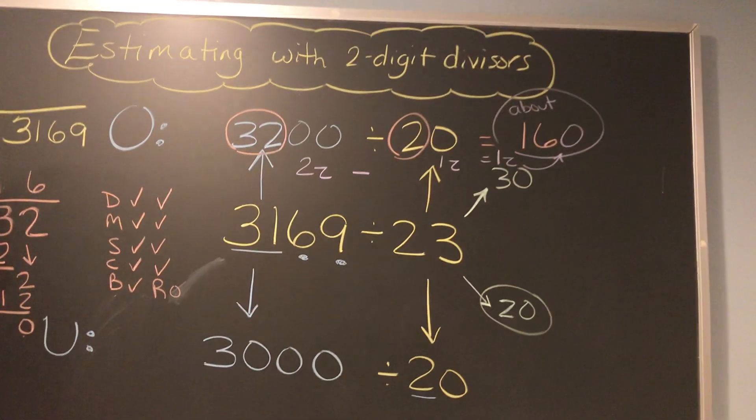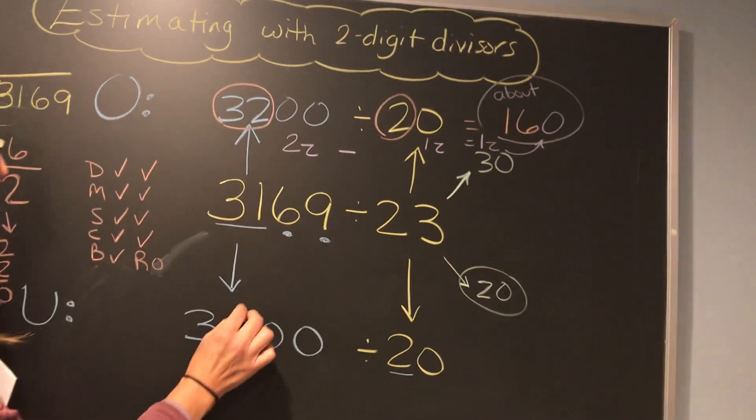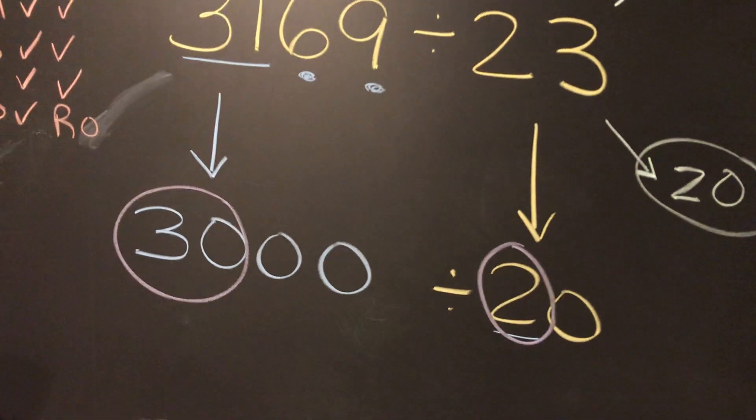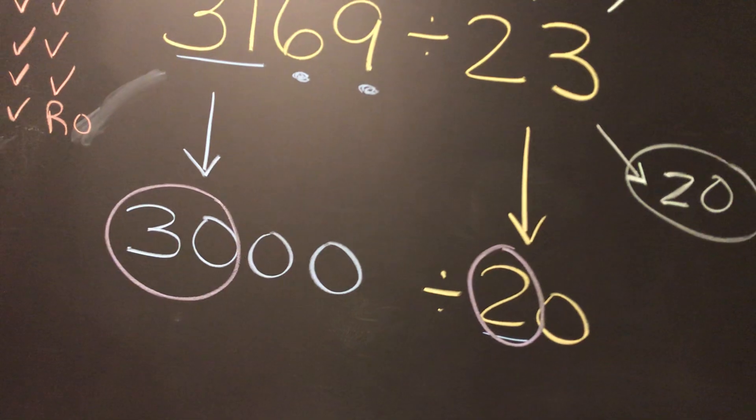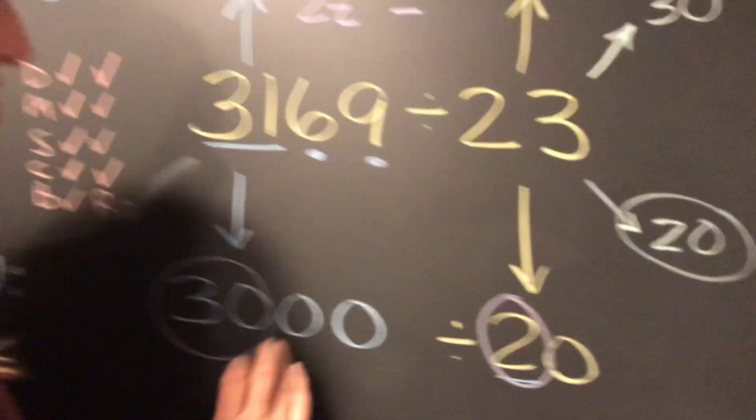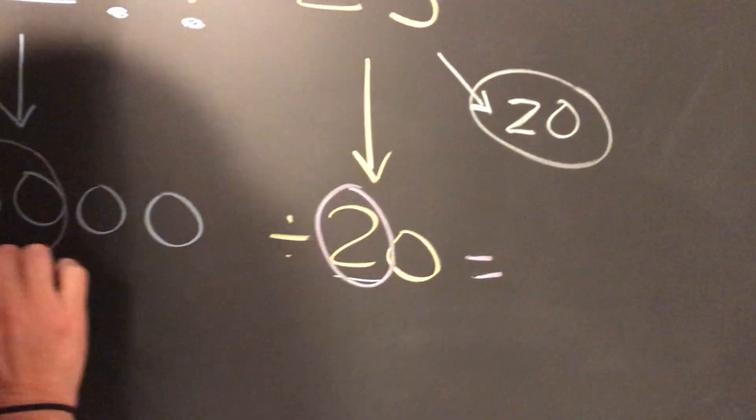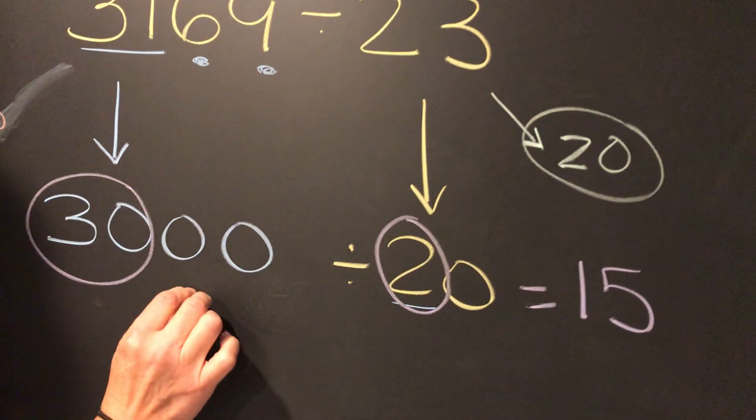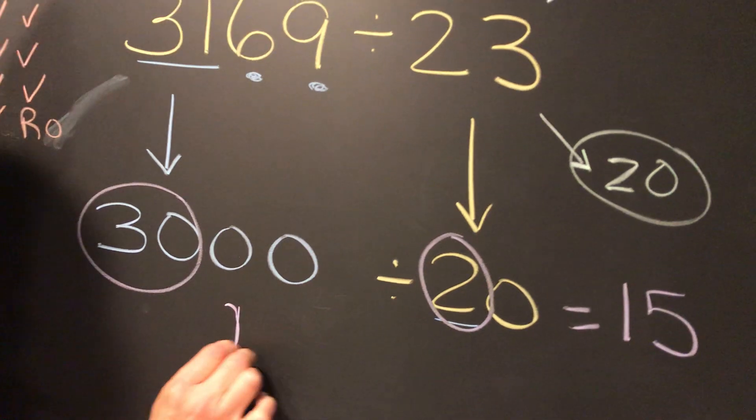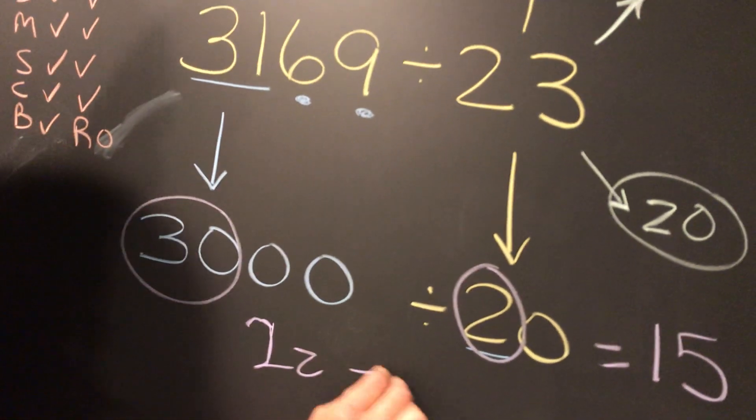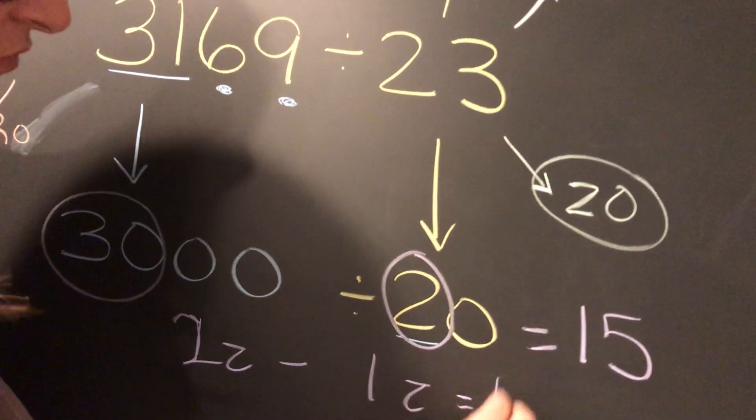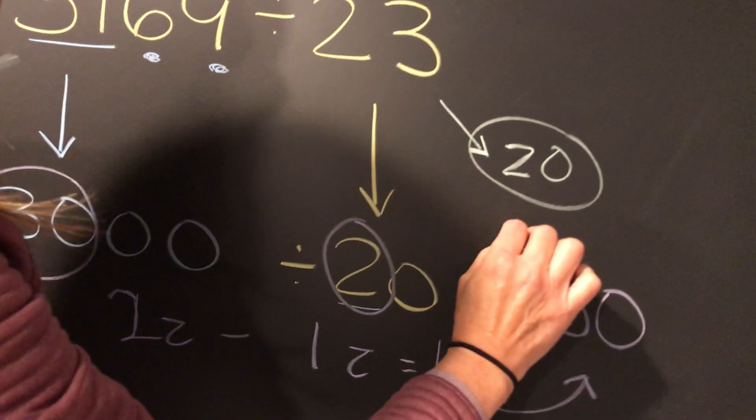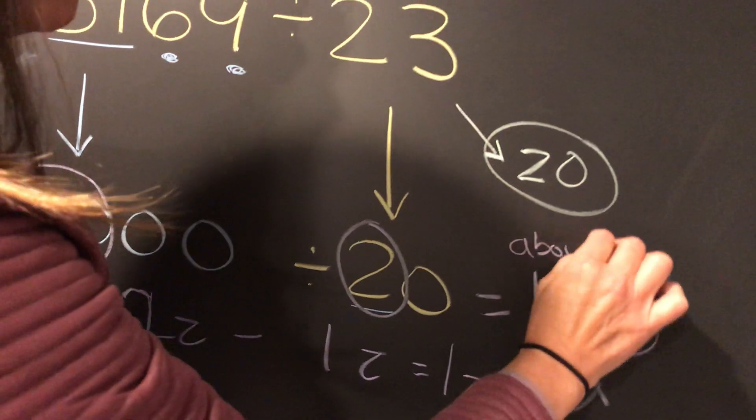If we do the same thing with our underestimate, we're going to do 30 divided by 2. It's going to be 15 because 15 times 2 is 30. Then you've got to go back and work your zeros again. 2 z's minus 1 z equals 1 z. Bring that 1 z or 1 zero in there. And your underestimate is about 150.